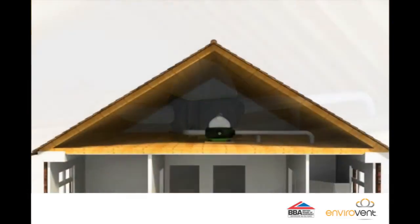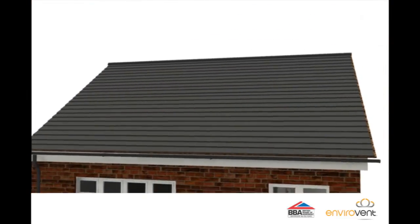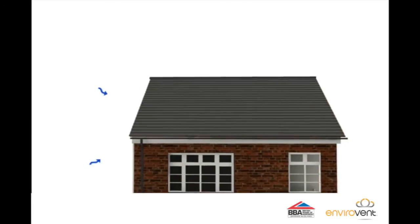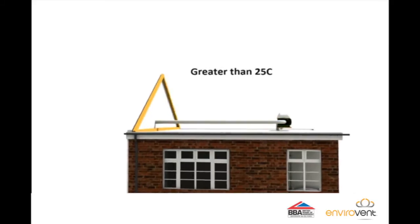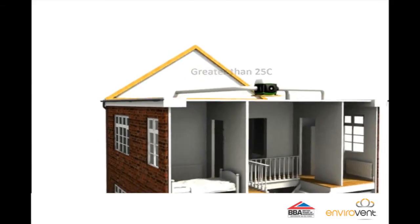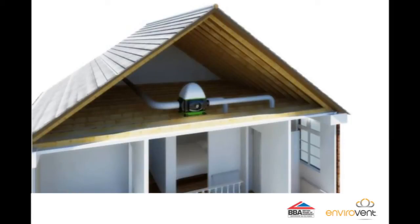When the loft temperature exceeds 25 degrees, the unit automatically detects this and activates a damper that switches the air supply from inside the loft space to the cooler air from outside the property. The result is all year round whole house ventilation.